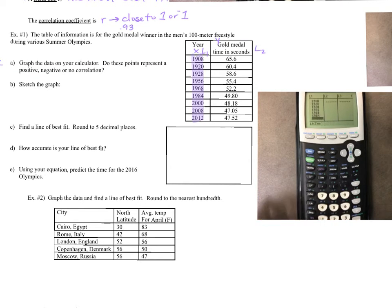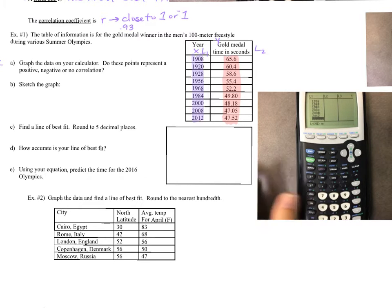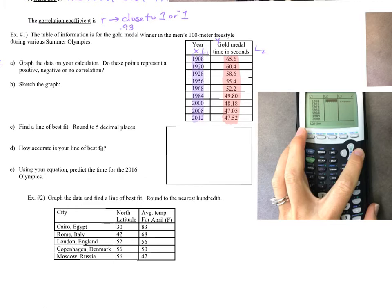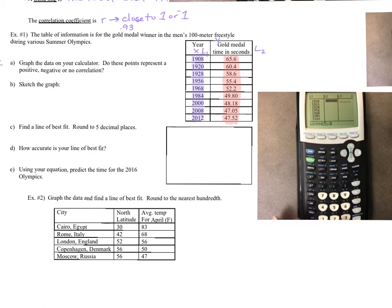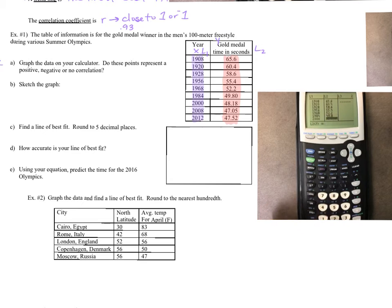Now move over to L2 for the swim times and enter: 65.6, 60.4, 58.6, 55.4, 52.2, 49.8, 48.18, 47.05, and 47.52. You can pause if I'm going too fast. Notice your L1 and L2 should be equal in length — if you have more on one side than the other, nothing will work. They have to be the same number of terms.